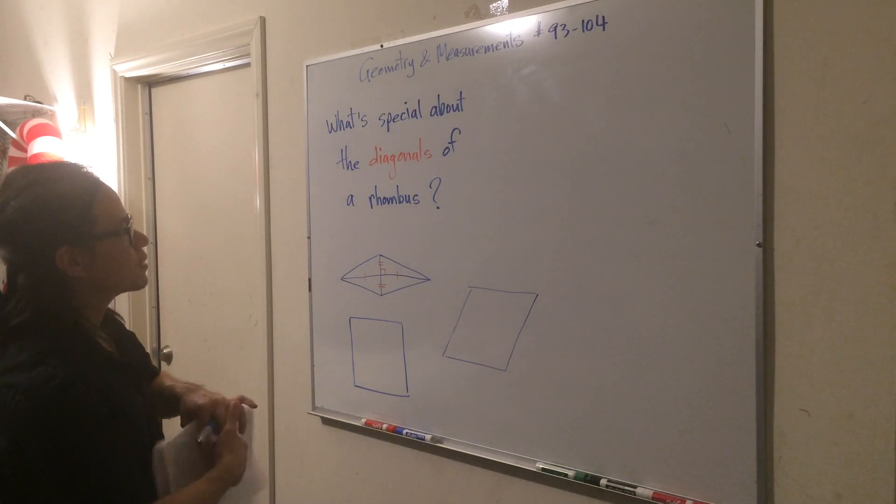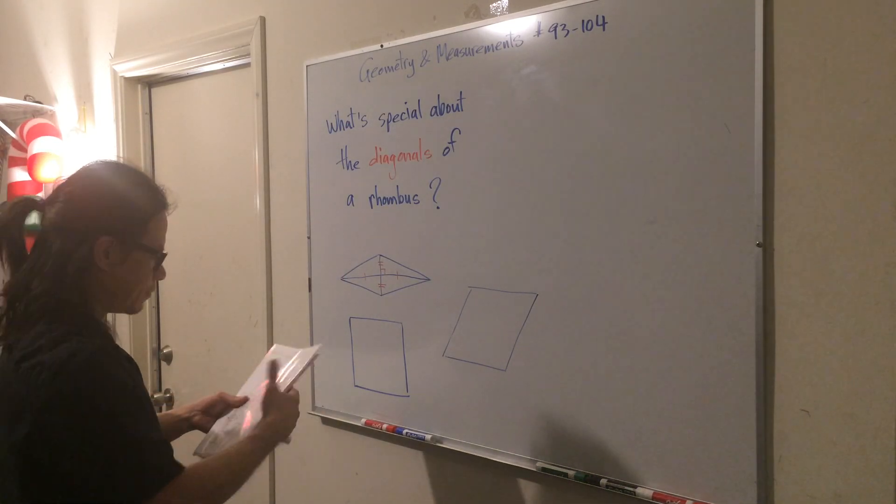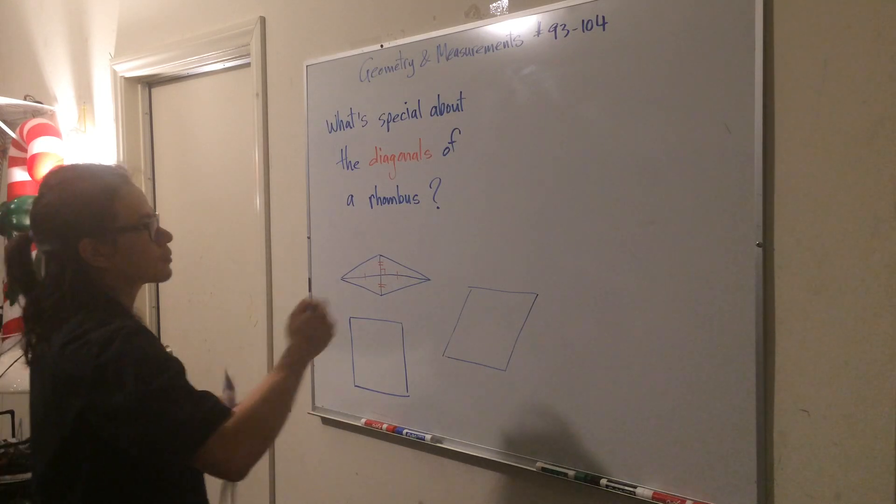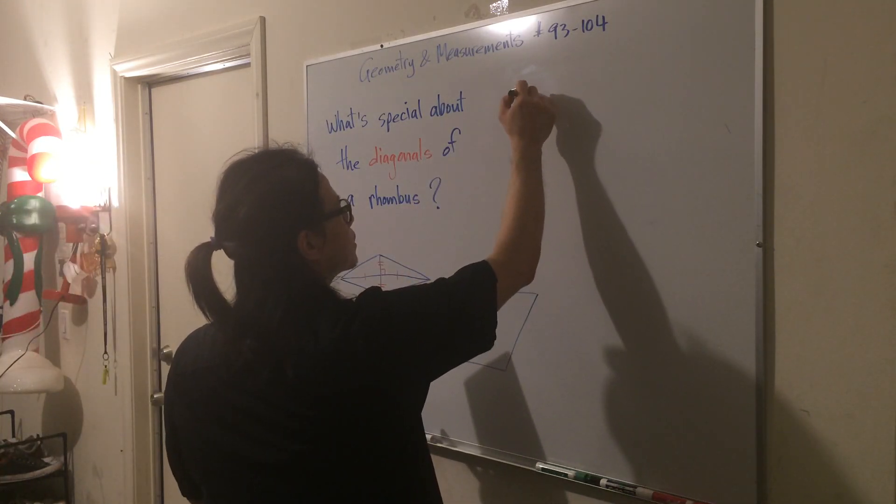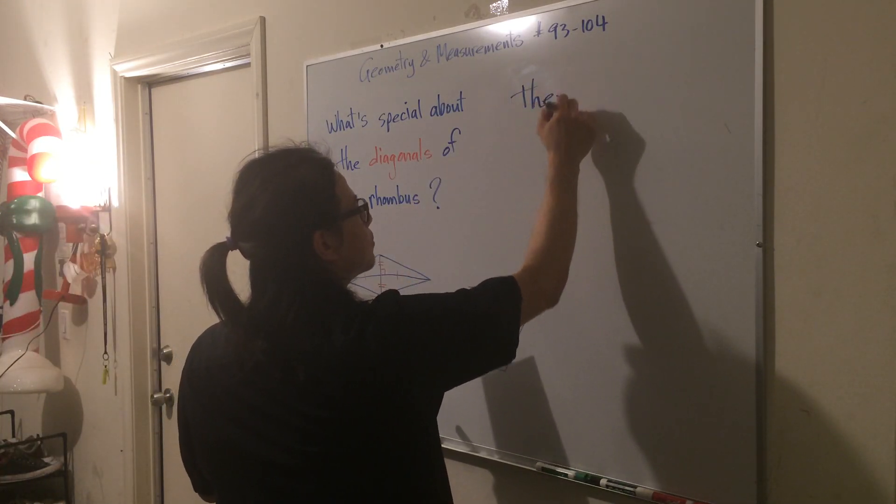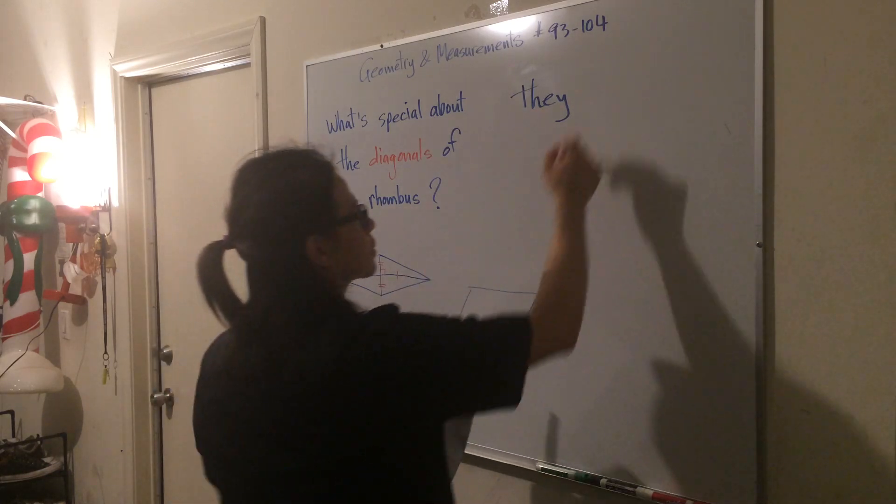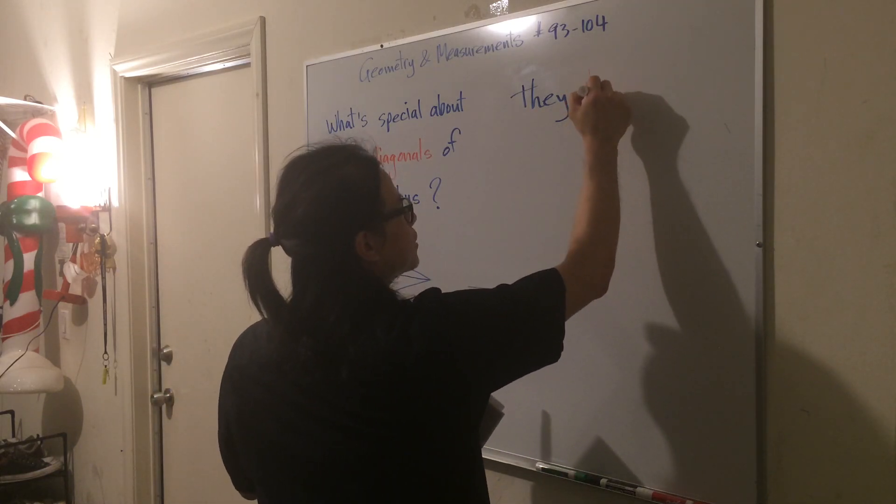You can say that the diagonals of a rhombus bisect... so let's say they bisect. Bisect means cut in half.